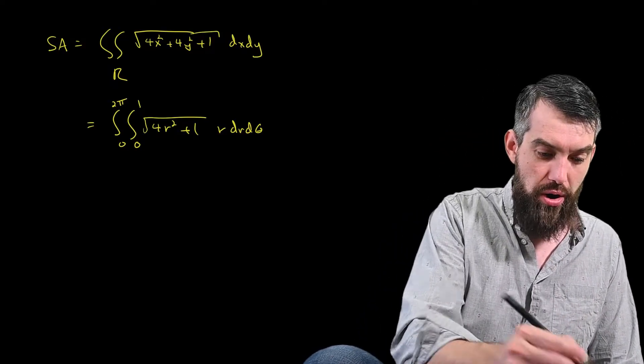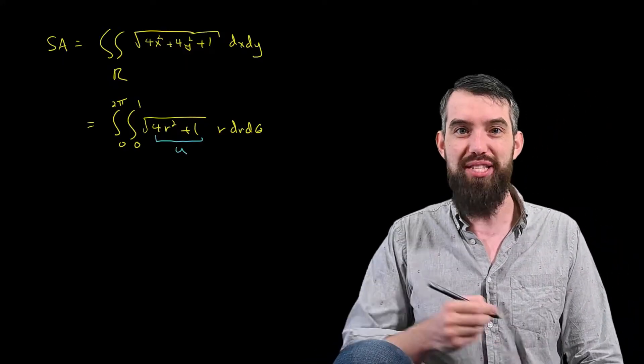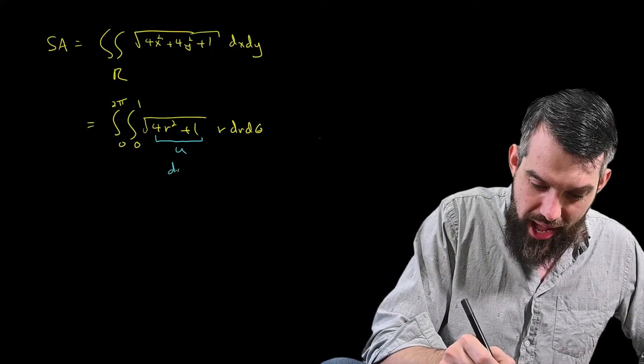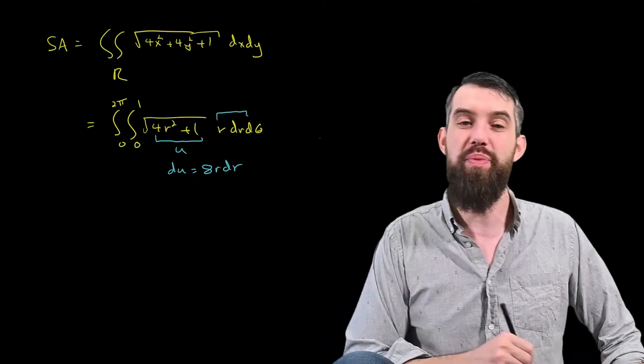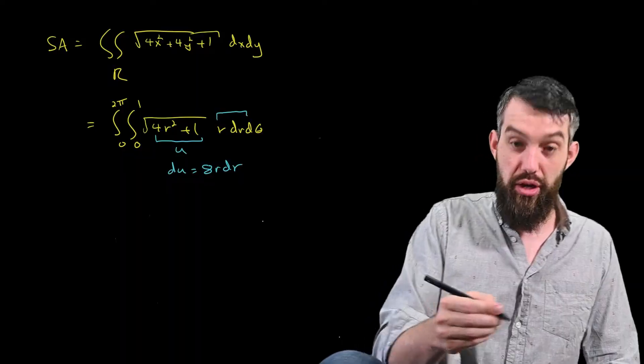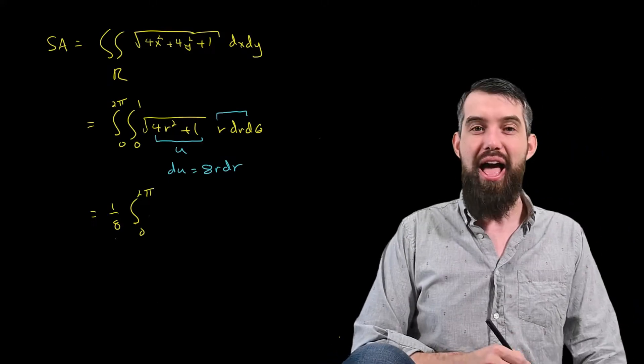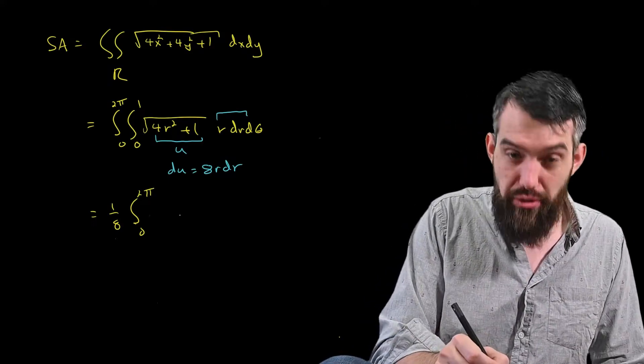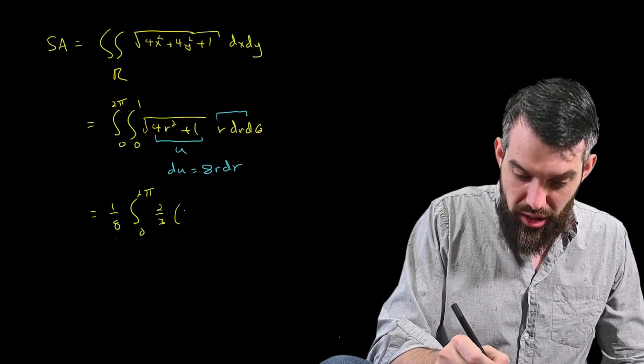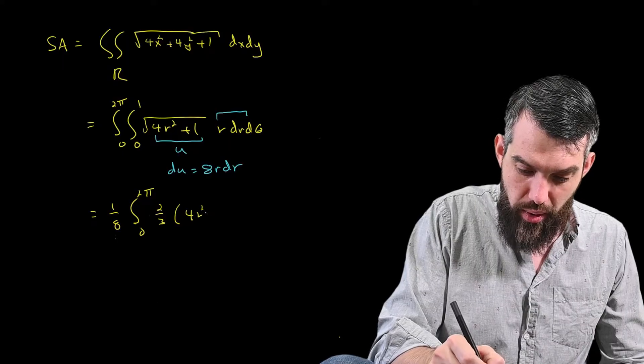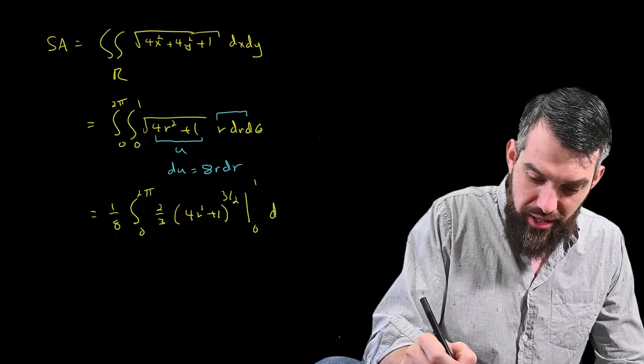It's quite nice that we had that r dr d theta here, because I need to actually do a little bit of a u substitution. Let u equal 4r squared plus 1. That correspondingly would mean that my du was going to be equal to 8r dr. I have an r dr appearing, and so this is 1 eighth of the du. Okay, so doing that integral, I'll put the 1 eighth out the front. I'm not touching the 0 to 2 pi at all. I have a square root of u, and so that's going to go to u to the 3 halves times 2 thirds. So 2 thirds times the u, which is 4r squared plus 1 to the 3 halves, evaluated between 0 and 1, and then all integrated out with respect to theta.